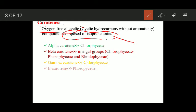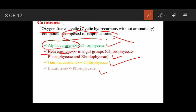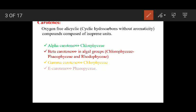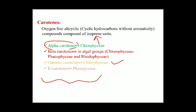Now the distribution of carotenes. Alpha carotene is found specifically in Chlorophyceae. Beta carotene is found in Chlorophyceae, Phaeophyceae, and Rhodophyceae — that means in all three algal groups. Gamma carotene is present in Chlorophyceae. Epsilon carotene is found in Phaeophyceae. So different types of carotenes are found in different types of algae — this is very important for examination purposes.